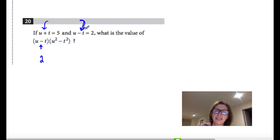Because if I multiply u plus t and u minus t, that's actually the difference of squares. And so I see the difference of squares right here.